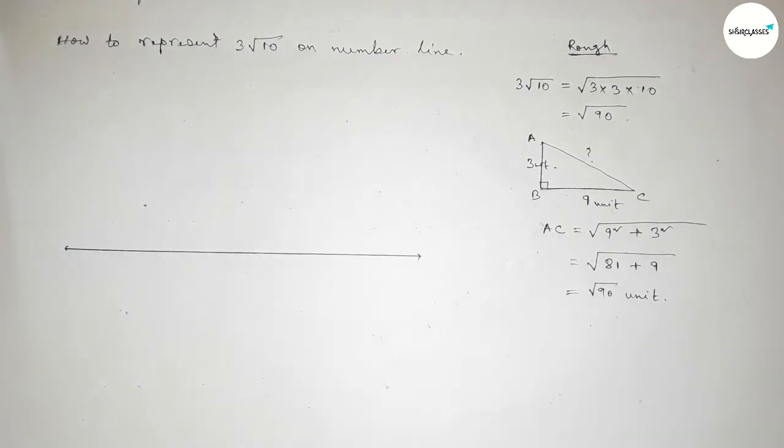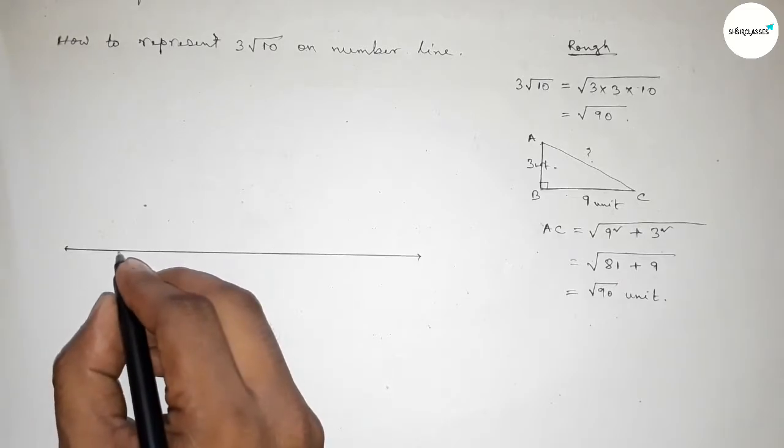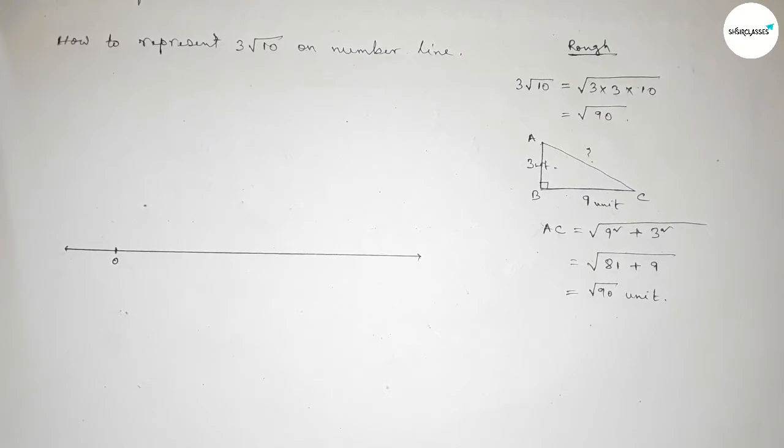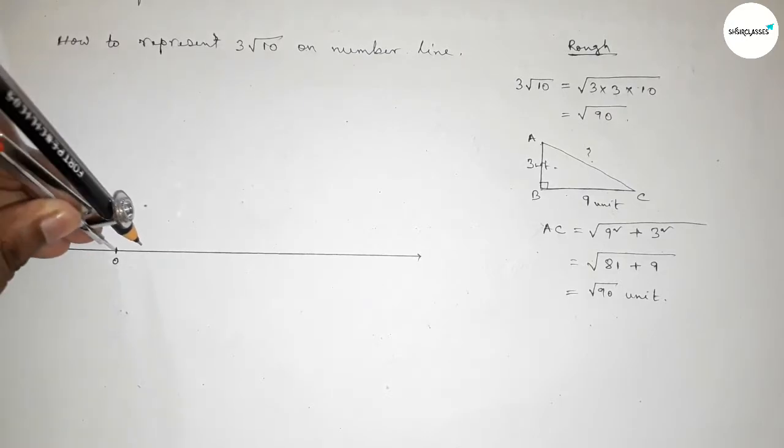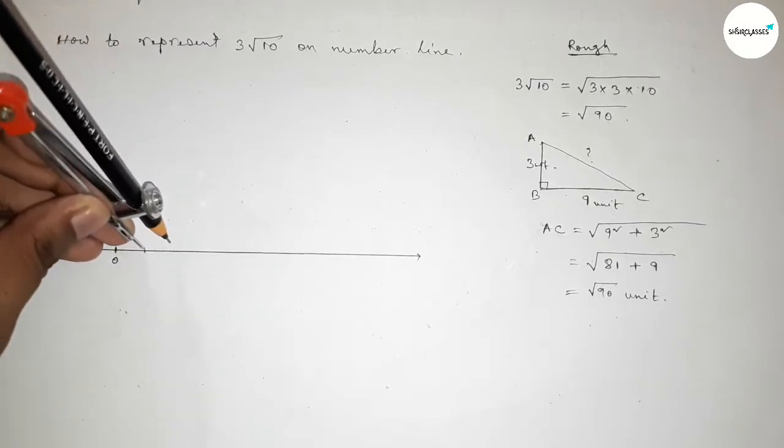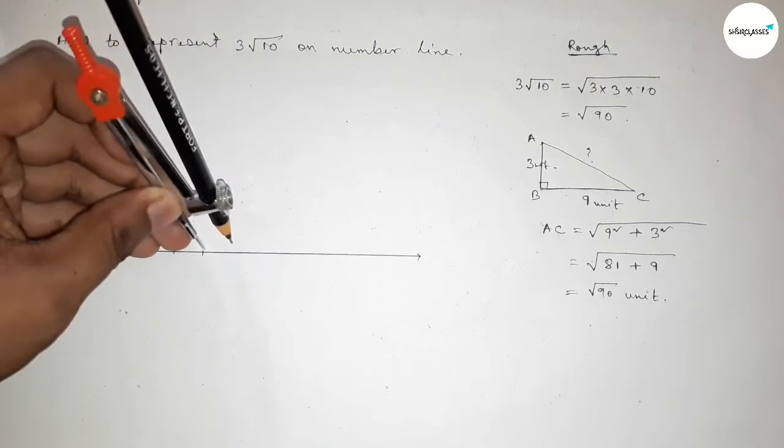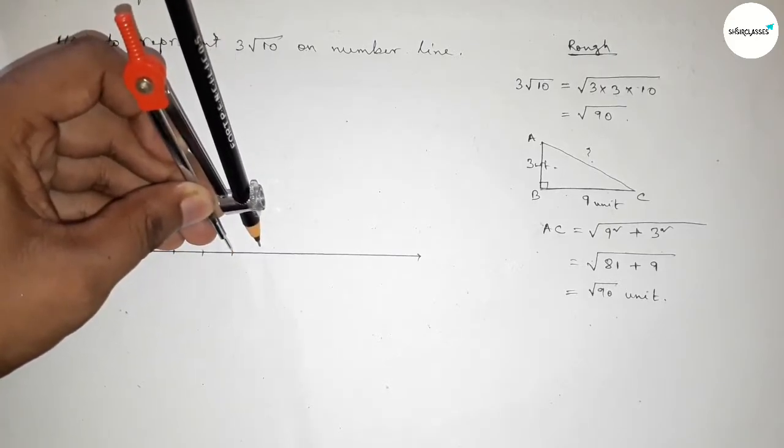So now drawing here a line of any length and taking arrow mark on both sides. Right, now taking here starting number 0. Now by using compass to mark the numbers on the line. So taking any length by using compass by this way and marking the numbers on the line.